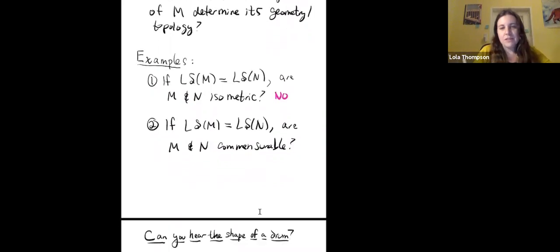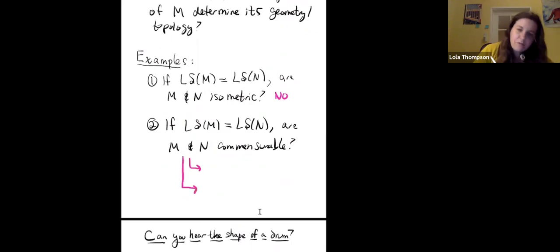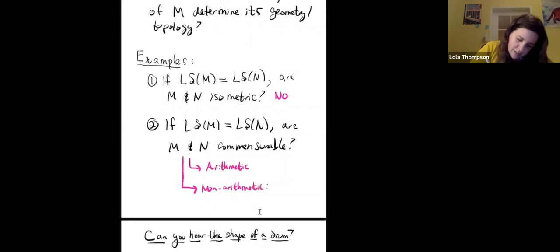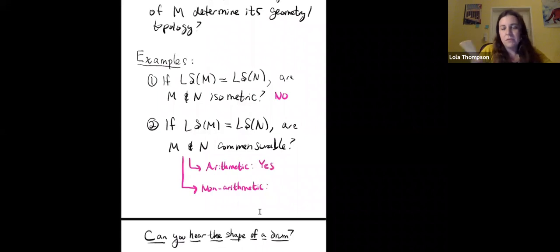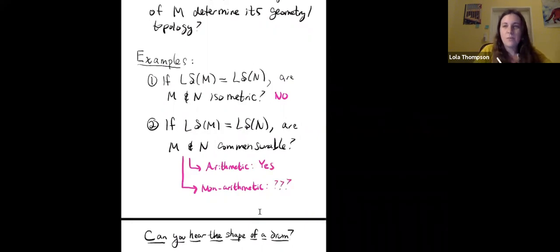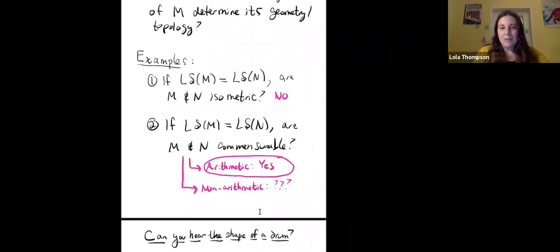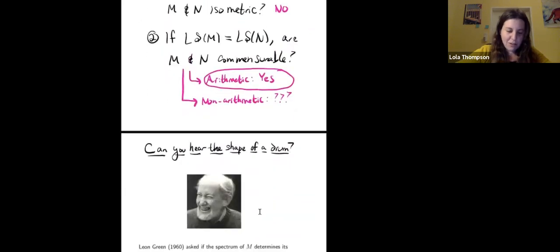In the arithmetic setting, the answer is yes: if your manifolds have the same geodesic lengths, they actually have to be commensurable. In the non-arithmetic setting, we have no idea — it's an open question. My work with Ben, Ben, and Paul focuses on the arithmetic situation. I just wanted to mention that in the non-arithmetic case, we still have absolutely no idea whether or not this is true.